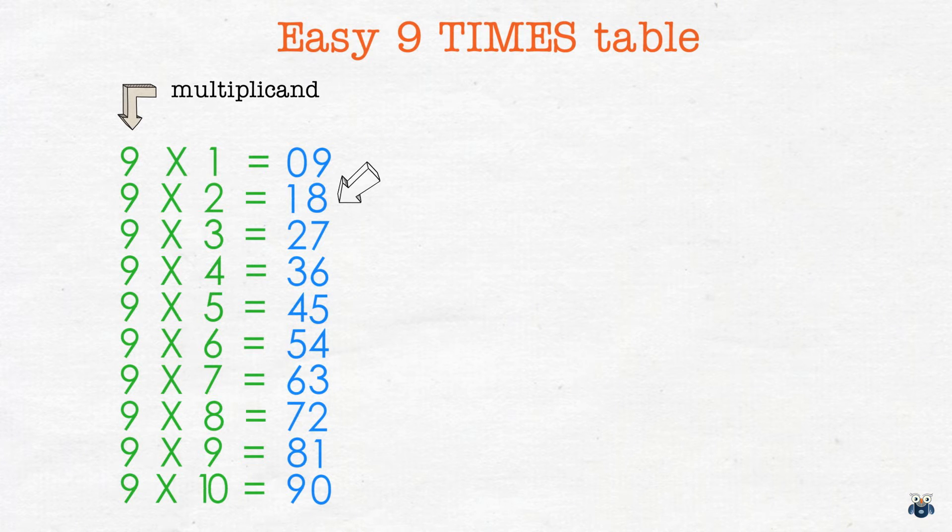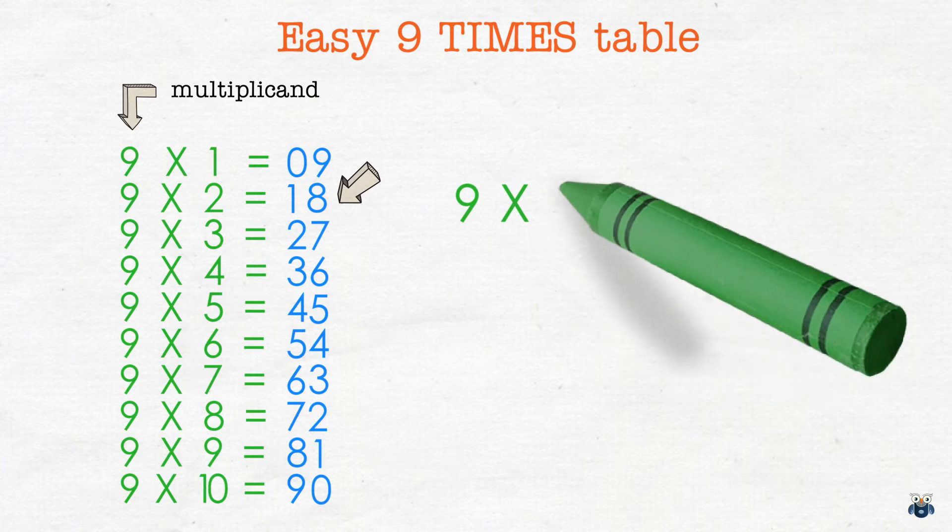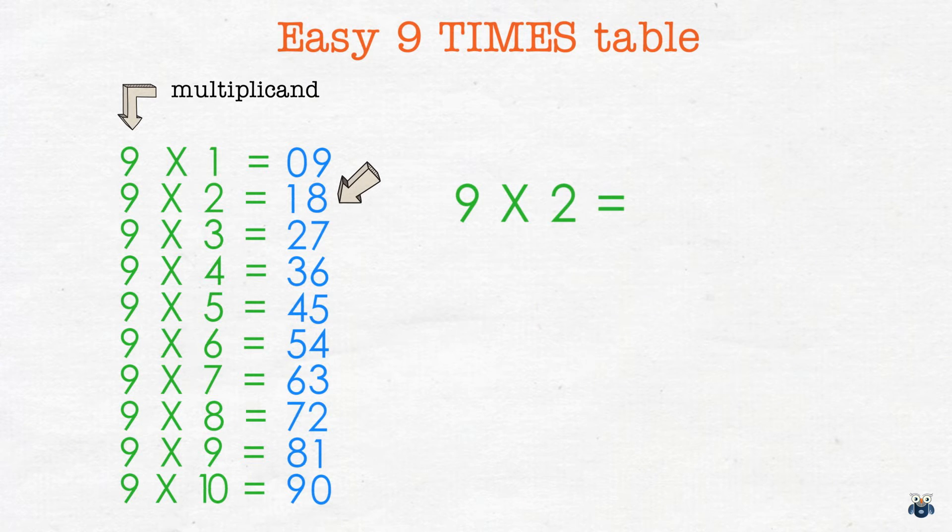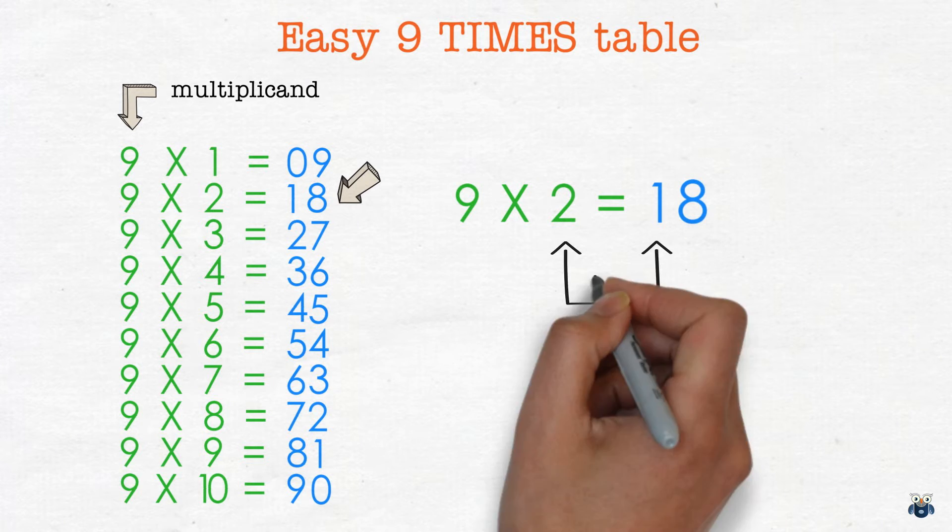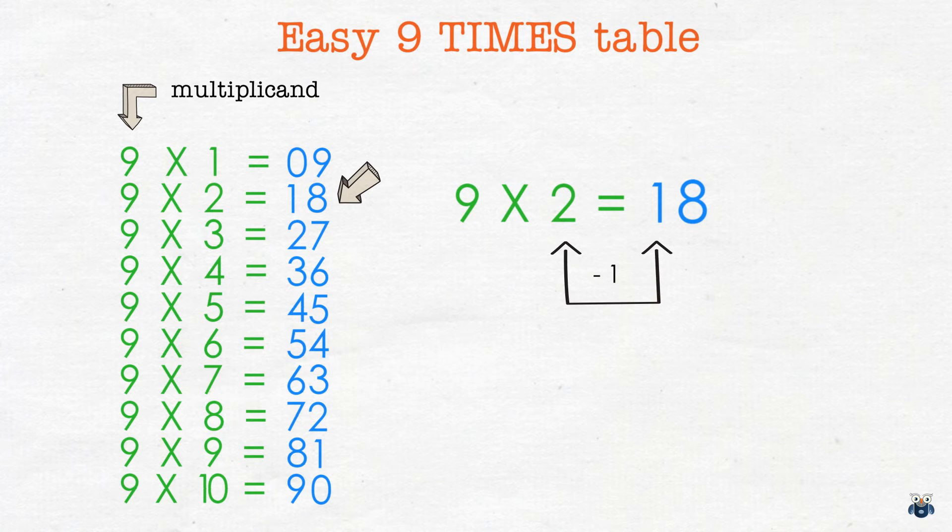Let's see if this pattern applies to the next result which is 9 times 2 is 18. Again we break 18 into two parts, 1 and 8. 1 is 1 less than 2 the multiplier and 8 is the result of subtracting 1 from 9 our multiplicand.